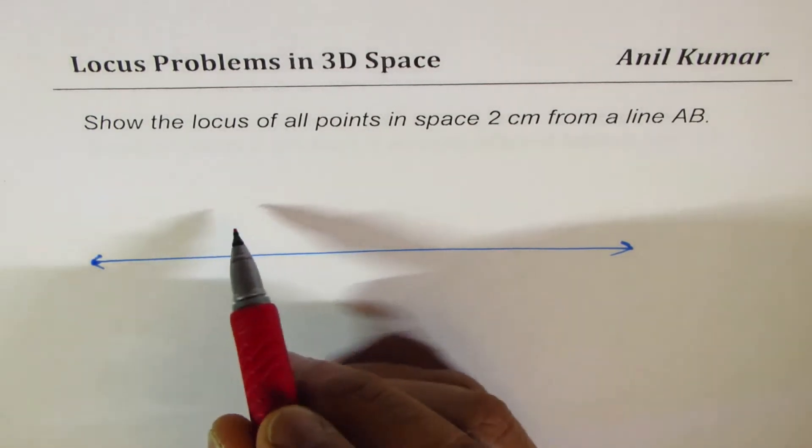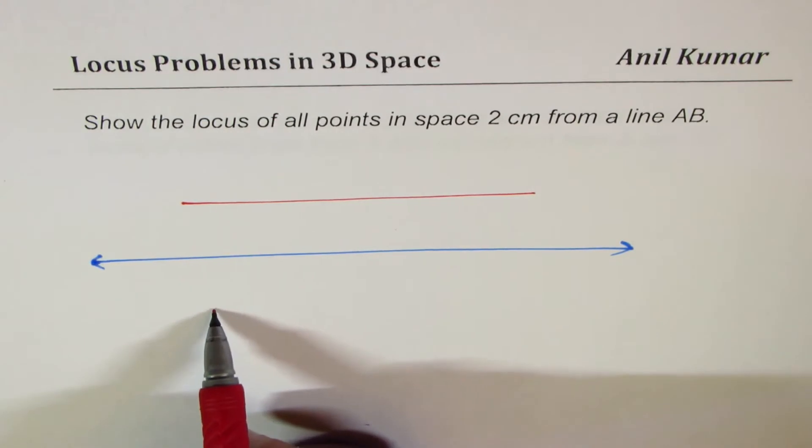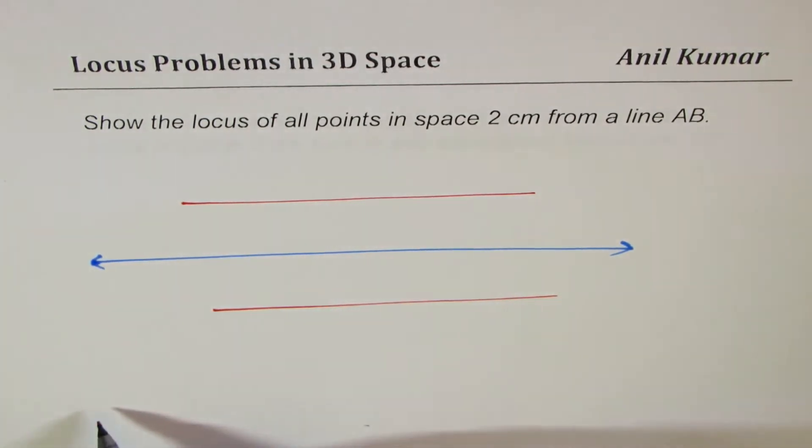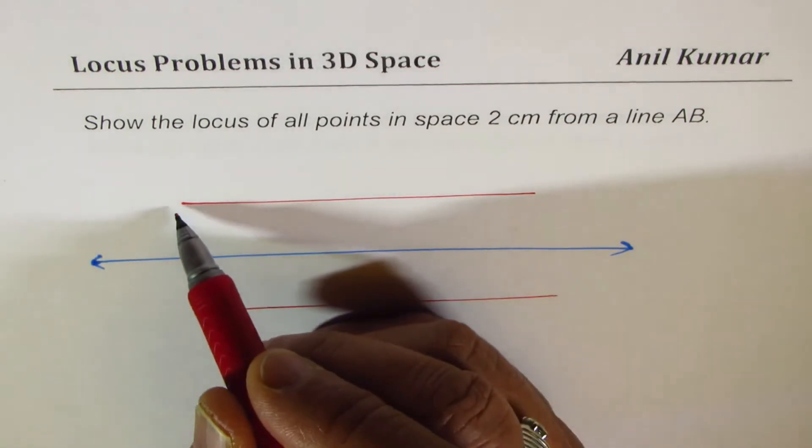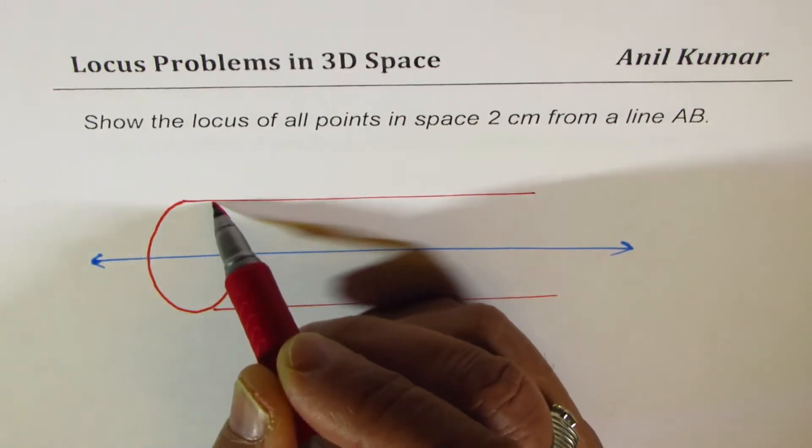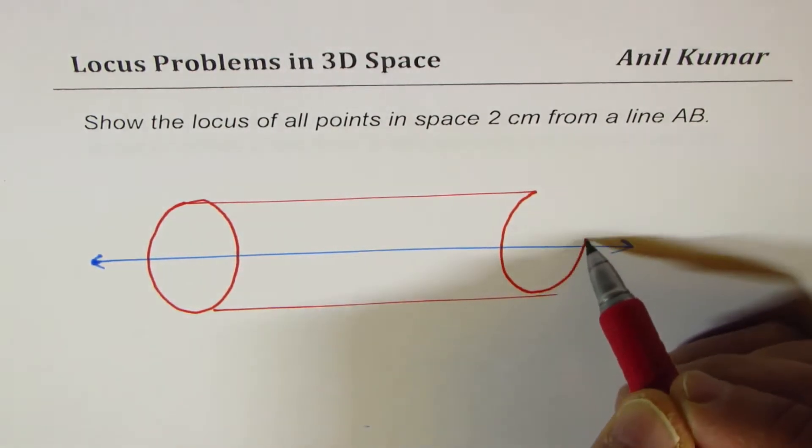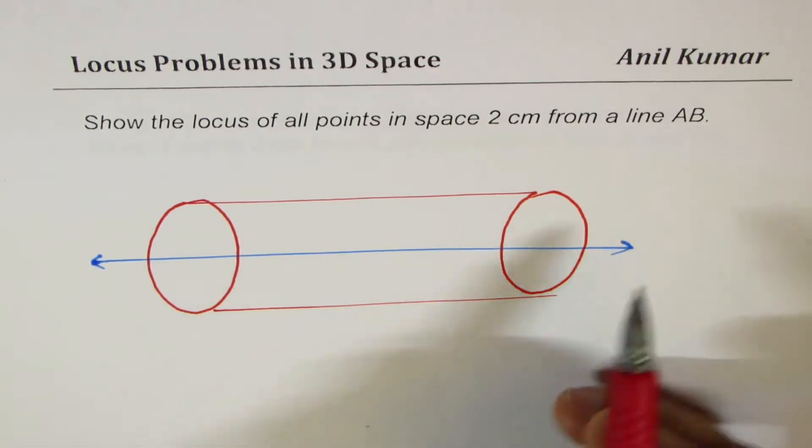So, that means it should be kind of like this, right? 2 cm on this side, 2 cm on this side. All the points we're talking about, that means we're looking into a cylinder, right? So, in 3D space, it is a cylinder. Do you see that? So, that is how it is in 3D space, a cylinder.